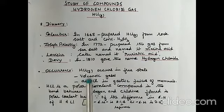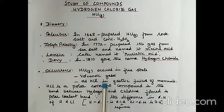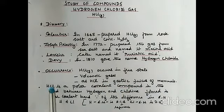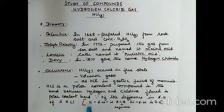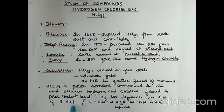Hydrogen chloride gas occurs in free state in volcanic gases and as hydrochloric acid in gastric juices of mammals. Hydrogen chloride is a polar covalent compound, as studied in chemical bonding. The bond between hydrogen and chlorine is polar covalent because of the difference in electronegativity — hydrogen is 2.1 and chlorine is 3.0. These numerical values are given only as reference.